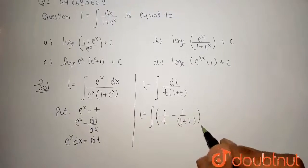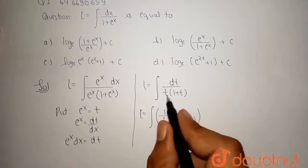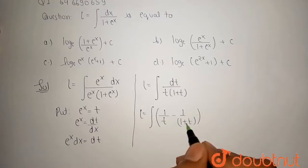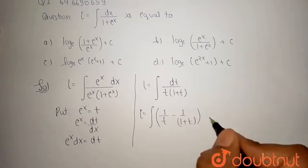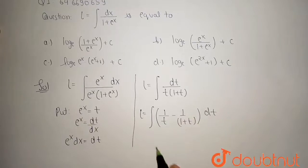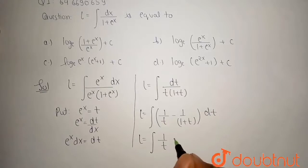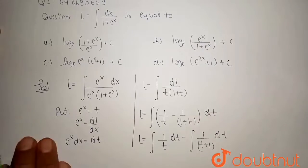Simply I can split these two terms: 1 upon t minus 1 upon t plus 1. Because if I do cross multiplication, then this term becomes 1 upon t into t plus 1 dt. After that, I can separate this integral. So this integral becomes 1 upon t dt minus 1 upon t plus 1 dt.